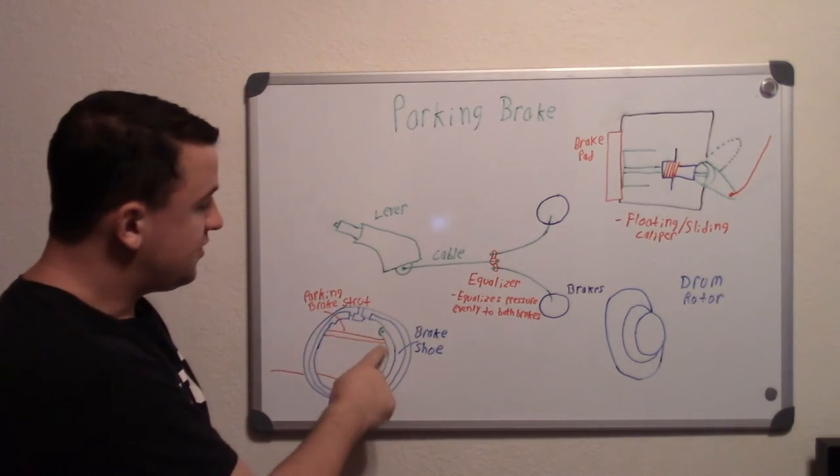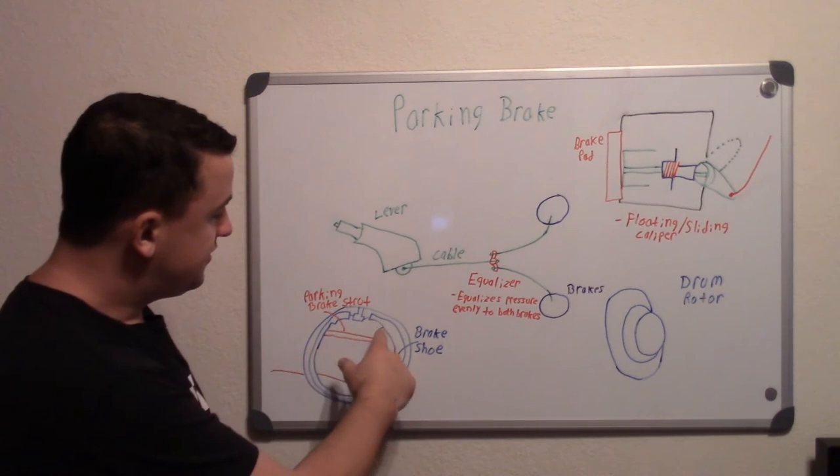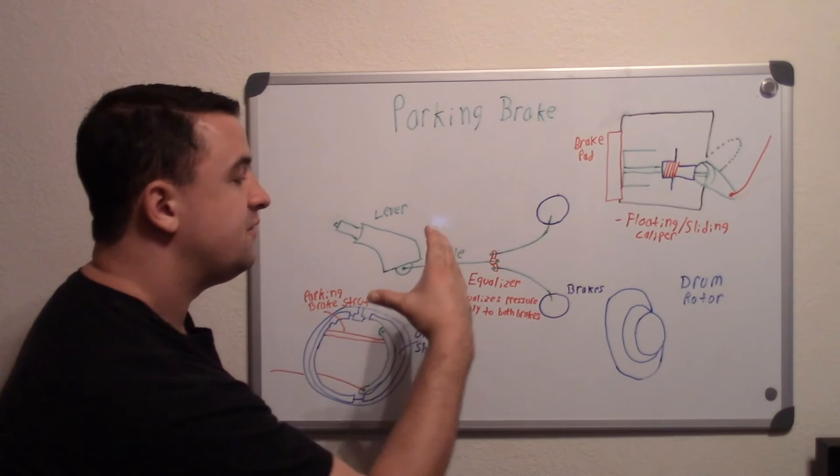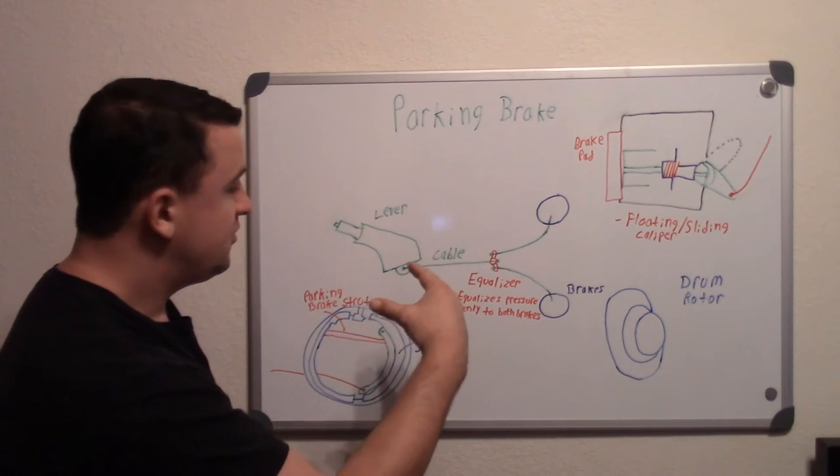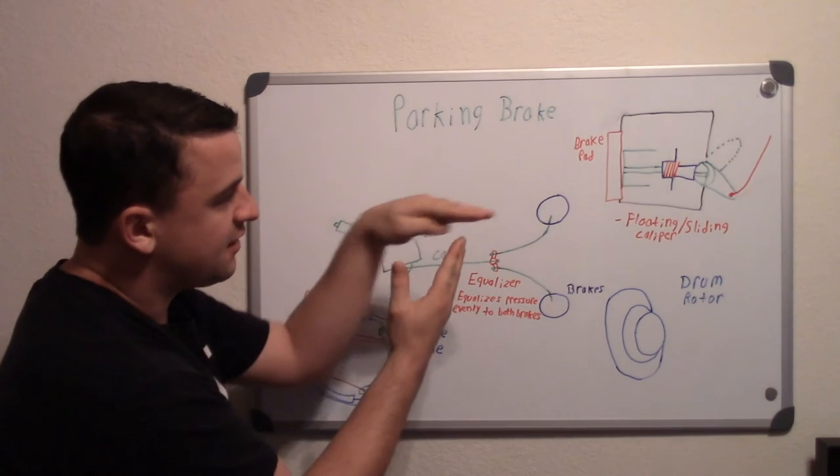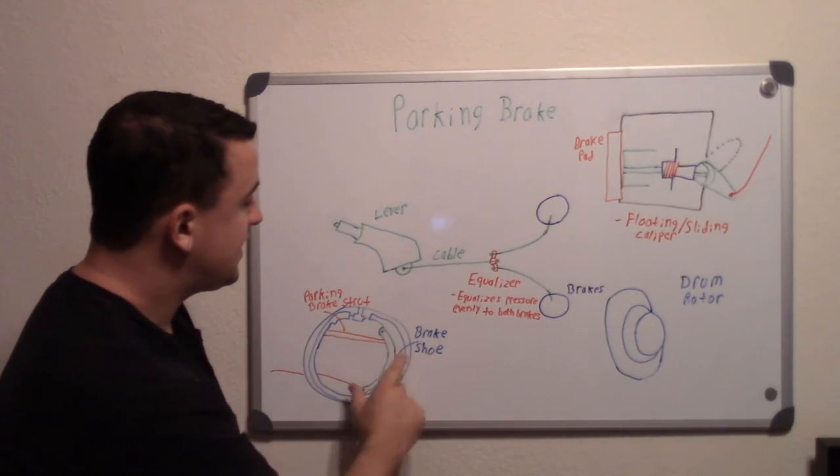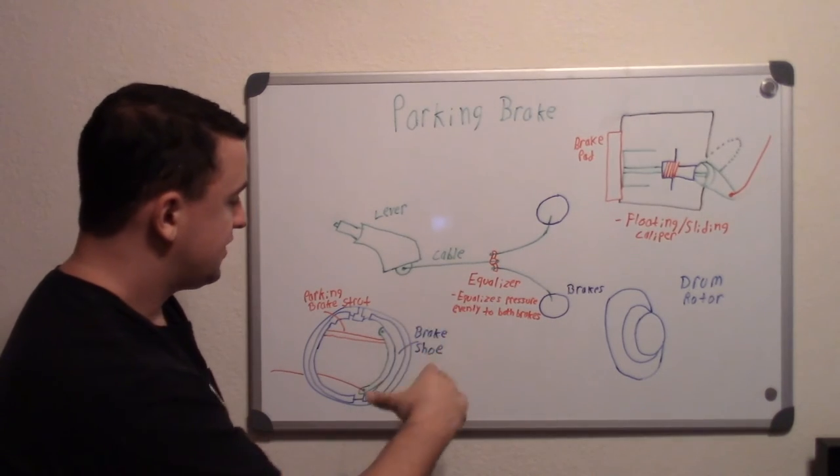That's what this part is. When you pull on the cable, this little part will move this way, and as it pivots up here, the top part will go back that way. As it goes back, that's engaging this side of the brake shoe, so it pivots.